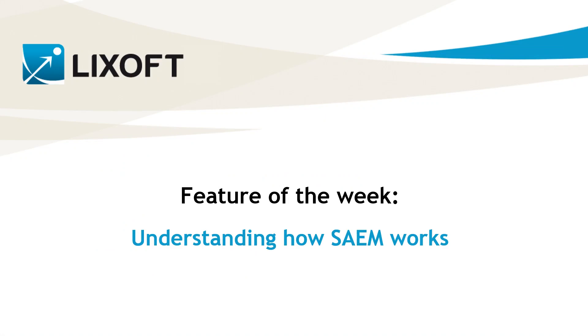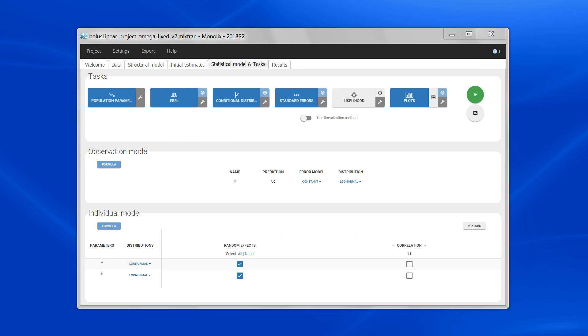Today I will explain to you how the SAEM algorithm works step by step. The SAEM algorithm is used for the estimation of the population parameters. The goal is to find the population parameters that maximize the likelihood, which is our objective function.